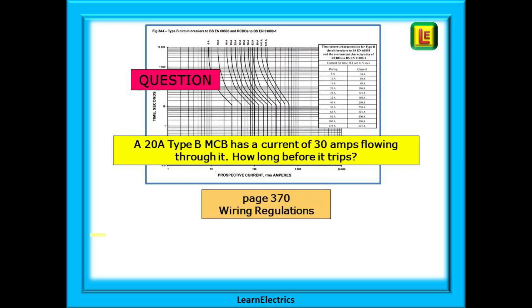So how do we use this graph? We can show you best with an example. A 20 amp type B MCB has a current of 30 amps flowing through it. How long will it be before it trips? And the answer might surprise you.